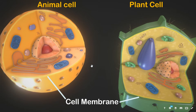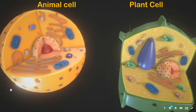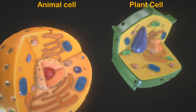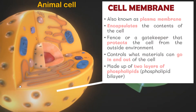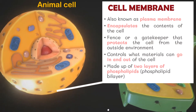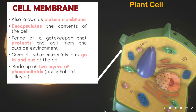The three basic structures are: the cell membrane, nucleus, and cytoplasm. The cell membrane, also known as the plasma membrane, encapsulates the contents of the cell. It acts like a fence or gatekeeper to protect the cell from the outside environment. It also controls what materials can go in and out of the cell.